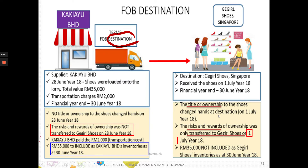Under FOB destination, the title of ownership was transferred on 1st of July, year 18 — the date the goods reached their destination. Therefore, on 30th of June year 18, the reporting date, there is no inclusion of the 35,000 in Google Shoes' inventory. It remains under the inventory of the seller, Kaki Ayu, until 1st of July year 18.